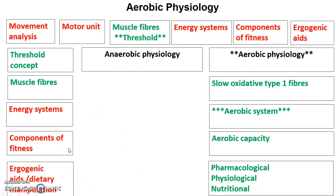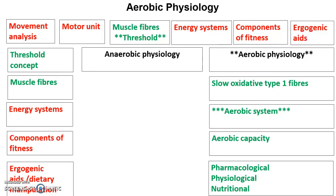Now what we're going to do is move on to our aerobic scheme of work. First, I'm going to assume knowledge on our slow oxidative type 1 fibres and do a little recap on that. Then we're going to look at sporting examples like marathon runners and long distance cyclists, and how they synthesize ATP to produce energy using the aerobic energy system. After that, we'll look at the component of fitness — aerobic capacity — how you train it, the adaptations that result, and finally three categories of ergogenic aids used to enhance aerobic performance.